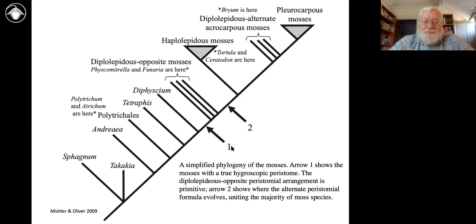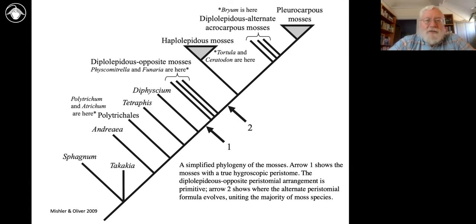The true peristome really doesn't evolve until about this level in the phylogeny. It appears that the diplolepidous opposite type is the primitive one. This is where Physcomitrium — which I showed you a picture of — and Funaria, which I also showed you, are found. Those are the ones that have the endostome and the exostome opposite each other and have rectangular leaf cells. They represent a bunch of lineages that diverge early. The first genome sequenced in a moss was Physcomitrium — one of these guys. We now have a few other mosses with fully sequenced genomes.